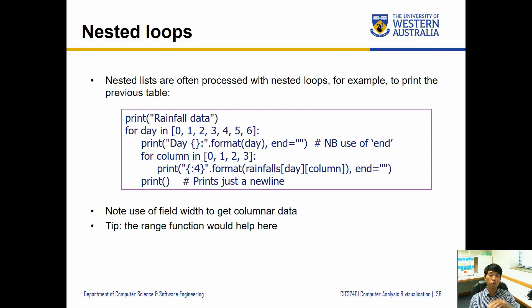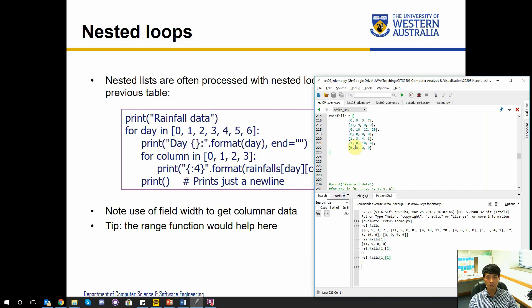So now we can write some loops to go over and do stuff with the values inside our nested lists. Nested lists are often processed with nested loops because we need to take the values out inside another list. So for example to print the previous table we can write up a code like this. So let's give that a go.